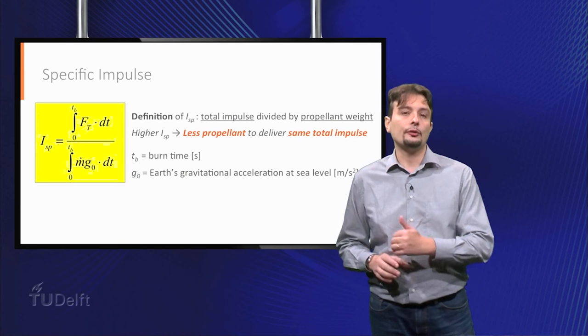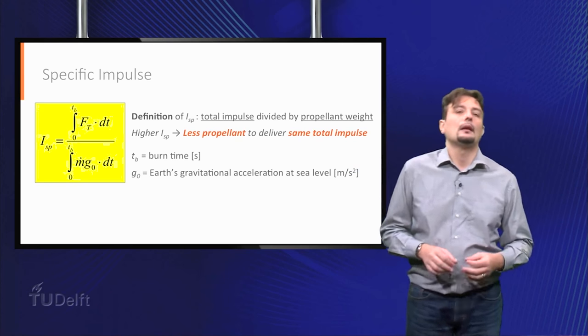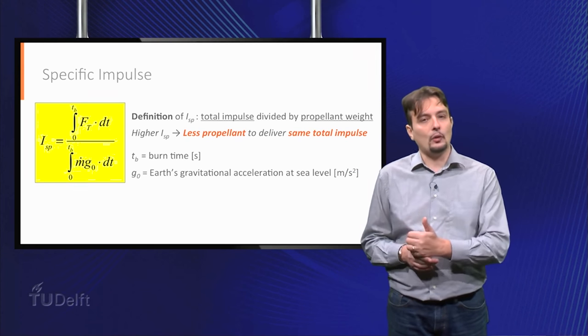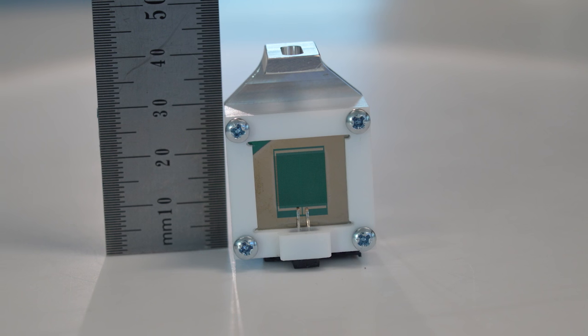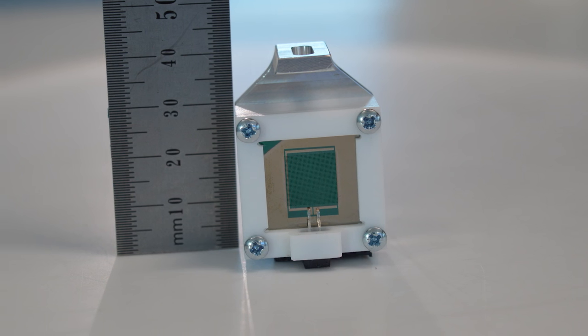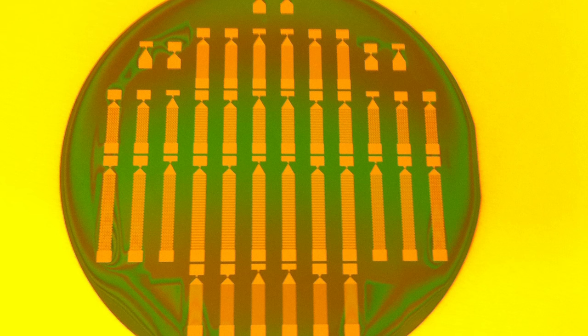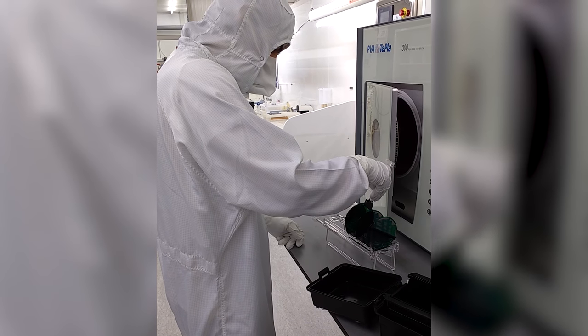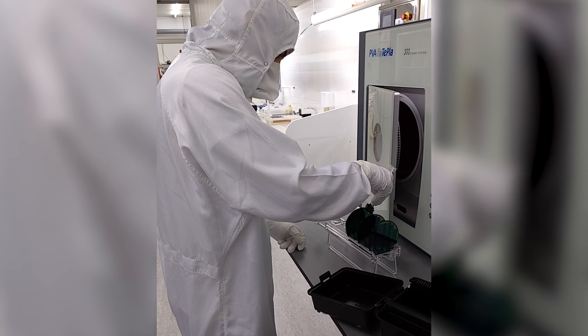You will first take a closer look at liquid and solid propellant engines. Then you will learn about the basics of electric propulsion and the different types of electric propulsion systems. Finally, we will go small and discuss the challenges and opportunities of miniaturized propulsion, its fundamental differences with conventional propulsion, and the main micro propulsion concepts available today.